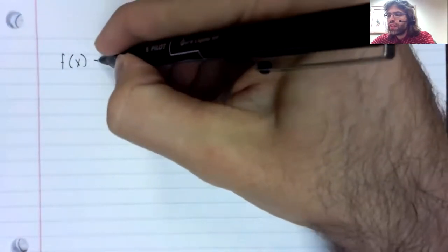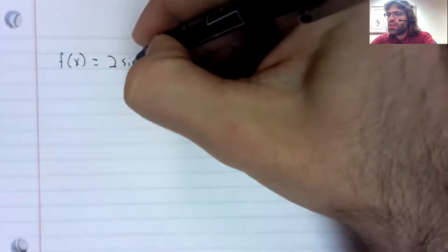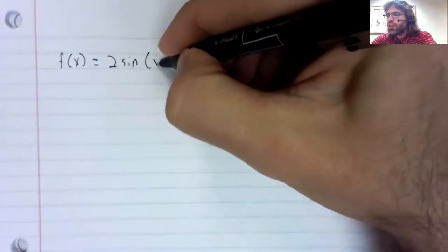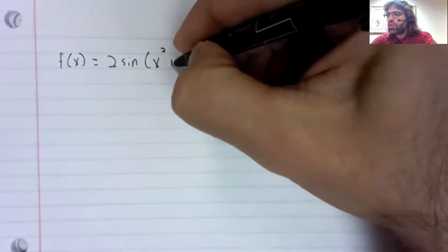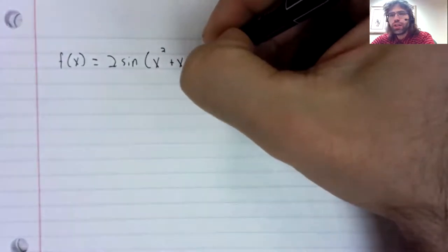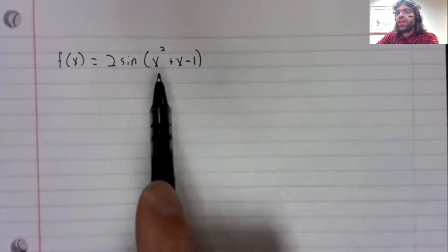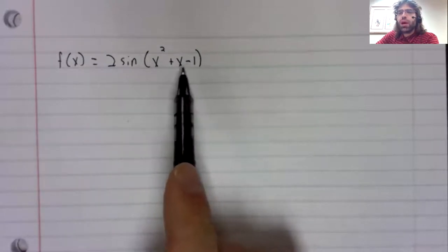So, say f(x) is two times the sine of x squared plus x minus one. We know how to take the derivative of the sine of x, we don't know how to take the derivative of the sine of this polynomial.